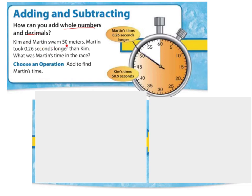Kim and Martin swim 50 meters. Martin took 0.26 seconds longer than Kim. What was Martin's time in the race? I'm looking at longer and I'm thinking, what does that mean? I want to find that's the question. So I know we're finding a time, but if it took longer, what am I going to do? Well, I'm looking at this right here. Kim's time is 50.9 seconds. And if it's longer, I know that I'm going to add to find Martin's time.